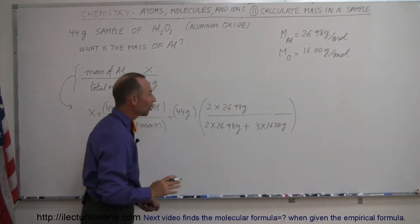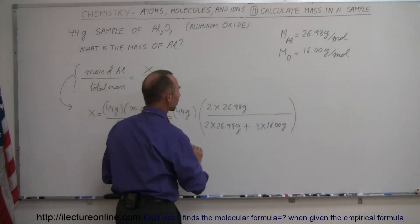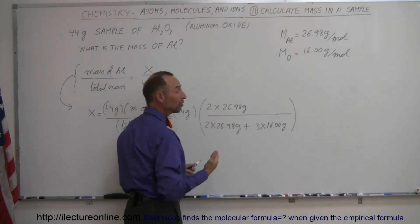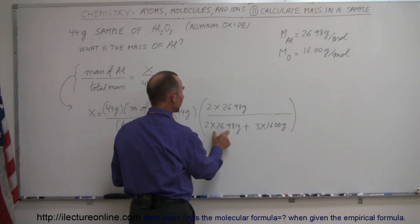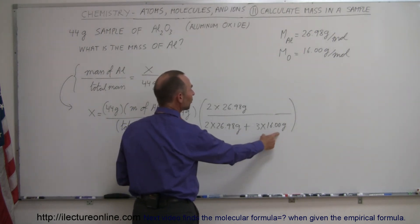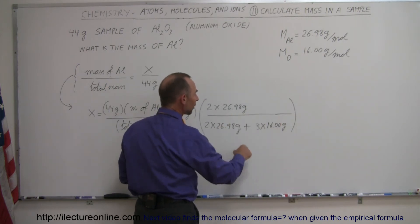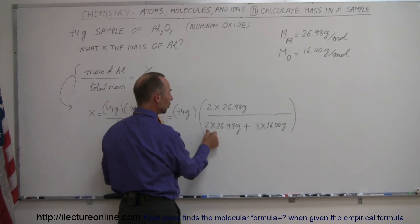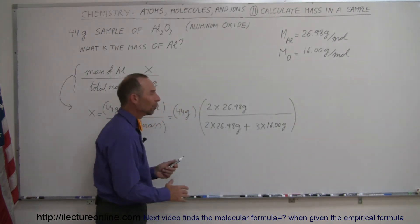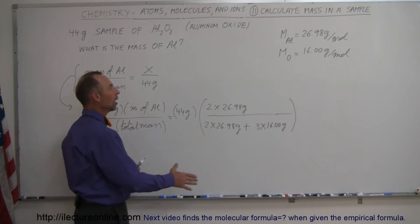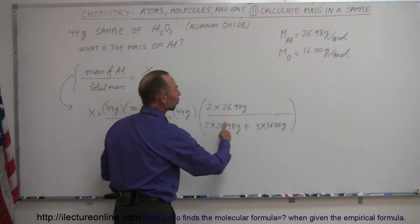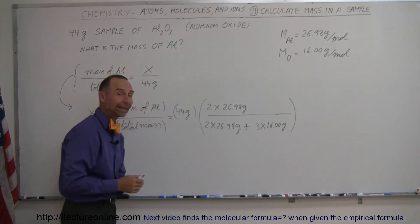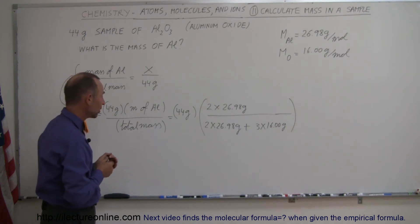We've found the ratio in terms of molar masses. This is the molar mass of aluminum with two moles ratio-wise in the sample, plus the molar mass of oxygen, which gives the total mass in the sample. We have two moles of aluminum versus three moles of oxygen, giving us the proper ratio of how much aluminum we have versus how much total mass. We take that ratio, multiply it times 44 grams, and we'll get the mass of aluminum in our sample.